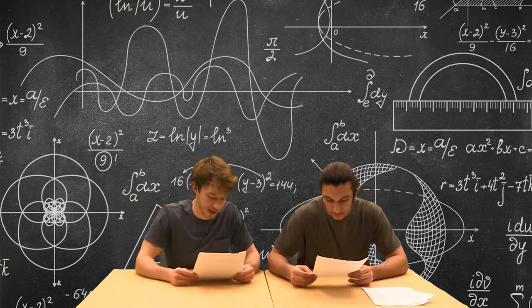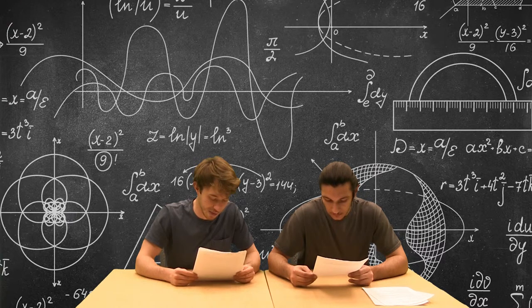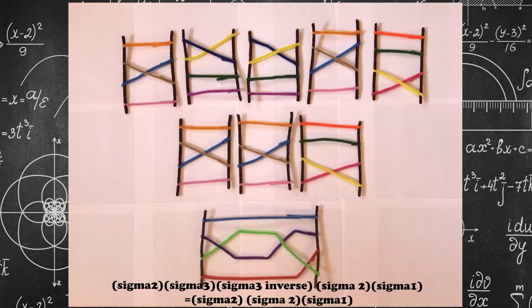The elementary braid and its inverse, one next to each other, cancel out to become the identity braid 1. Sigma 2, sigma 3, sigma 3 inverse, sigma 2, sigma 1 equals sigma 2, sigma 2, sigma 1.